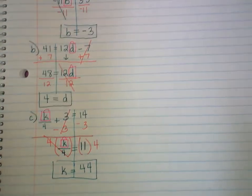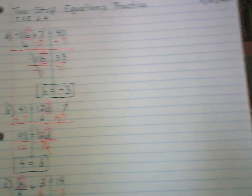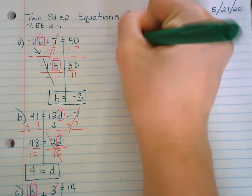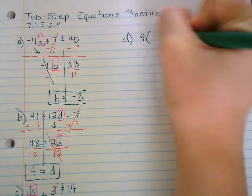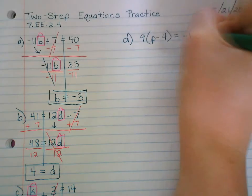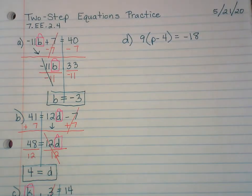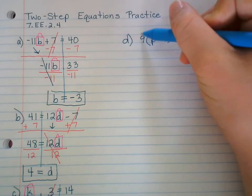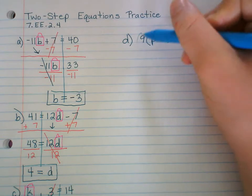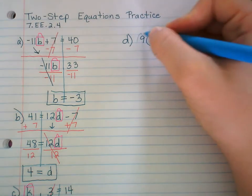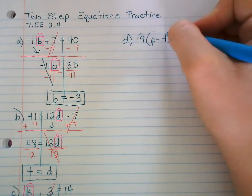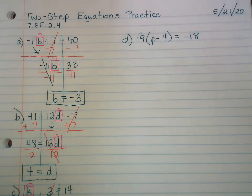All right, so the next one we're going to do, it might look scary. It's not. There's a trick to it. 9(p - 4) = -18. Now don't let the parentheses scare you. Don't let that block out your thinking. You can do this. There's truly two different ways you can do this. One is the way that is honestly more work. You could distribute. You could circle this and do the rainbow where you multiply the 9 by each number. And then it's a two-step equation. You could do that, where it'd be 9 times p is 9p, 9 times -4 is -36 equals -18.